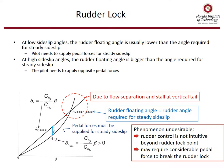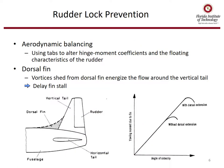Next we'll cover rudder lock. At low sideslip angles, the rudder floating angle is usually lower than the angle required for steady sideslip, so the pilot needs to supply pedal forces. At high sideslip angles, the rudder floating angle is bigger than the angle required for steady sideslip and the pilot needs to apply opposite pedal forces — this phenomenon is undesirable. Rudder control is not intuitive beyond the rudder lock point and may require considerable pedal force to break. To prevent rudder lock, we can use tabs to alter hinge moment coefficients or add dorsal fins. Dorsal fins shed vortices to energize the flow around the vertical tail, ultimately delaying fin stall.